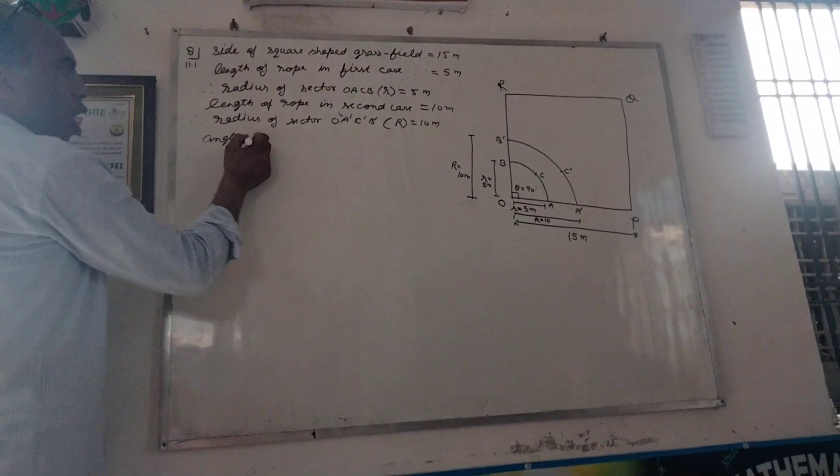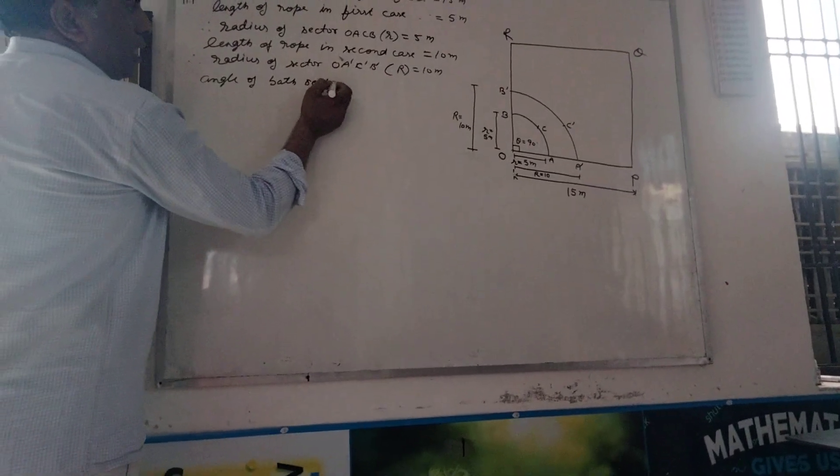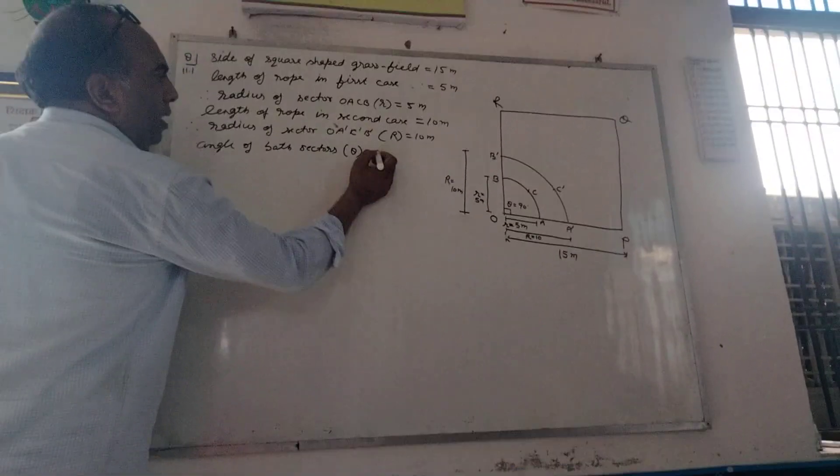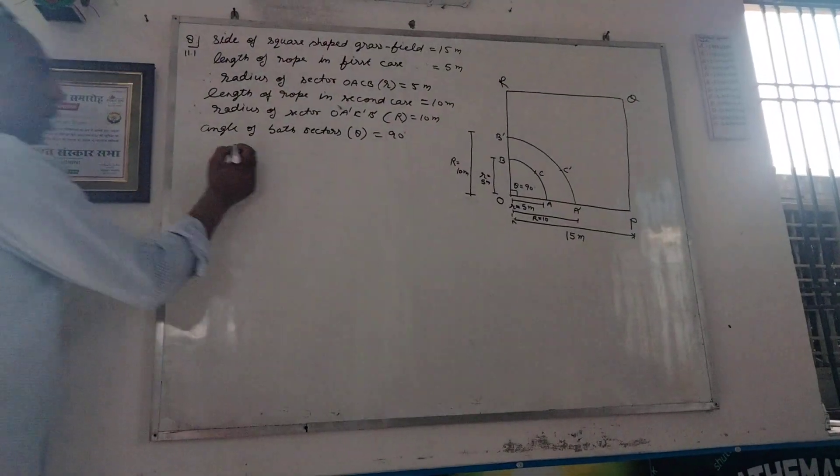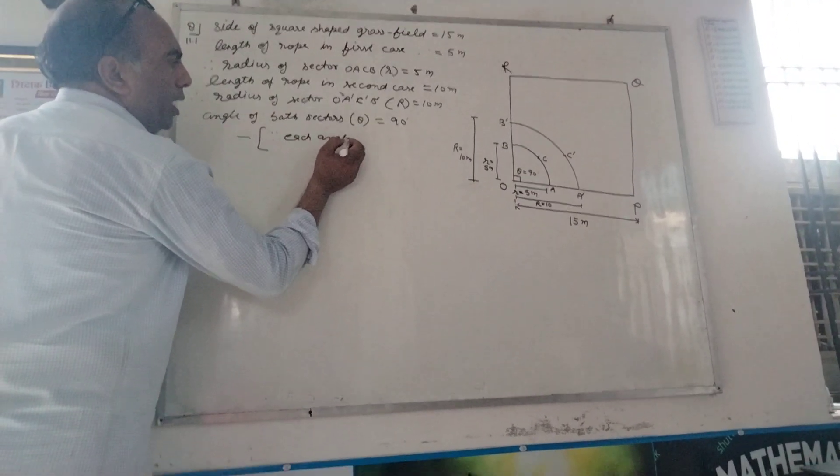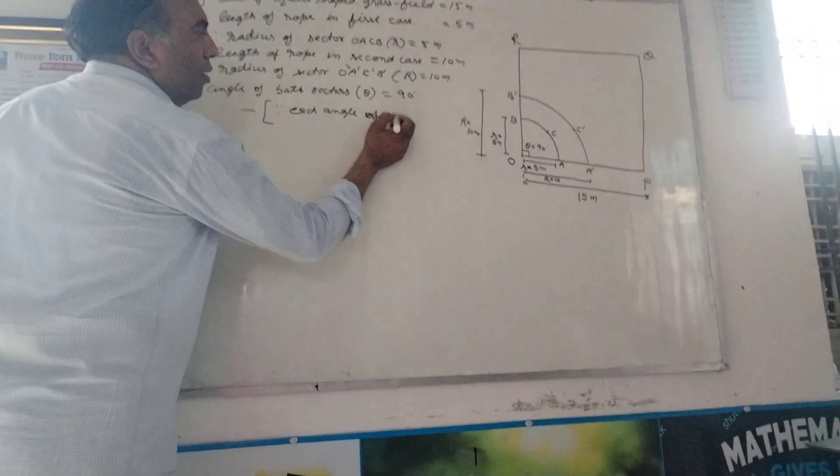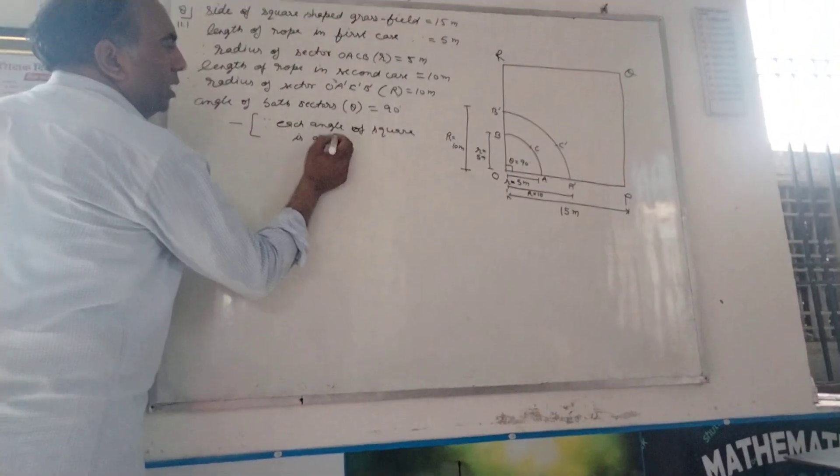You can see the angle of both sectors. So these are 2 sectors. We are going to show you angle of the 2 sectors. And the angle of the 2 sectors is 90 degrees. Because each angle of the 2 sectors is 90 degrees.